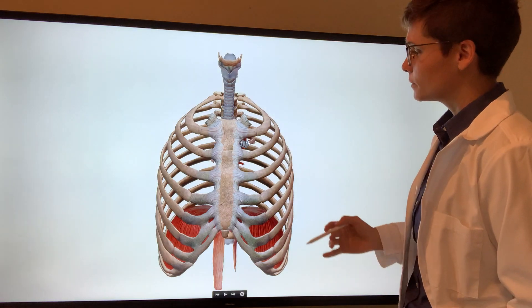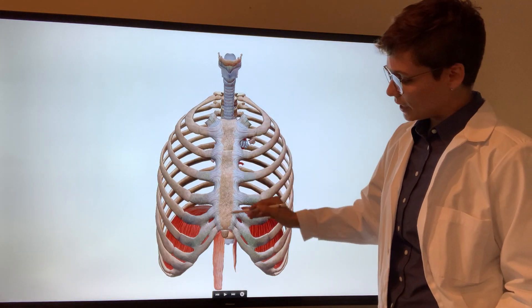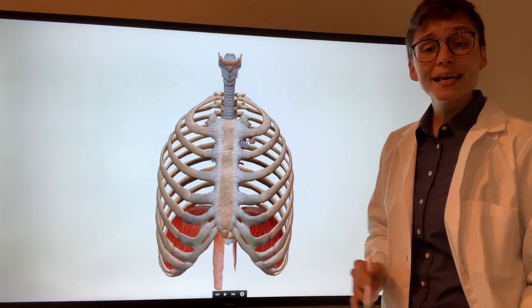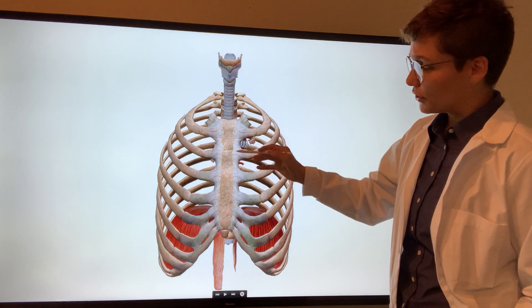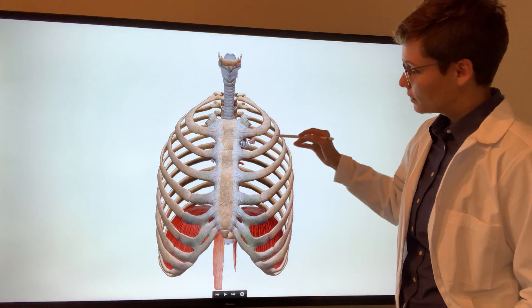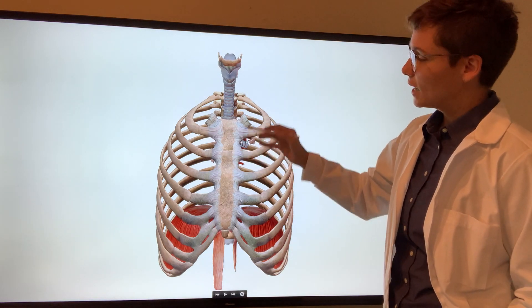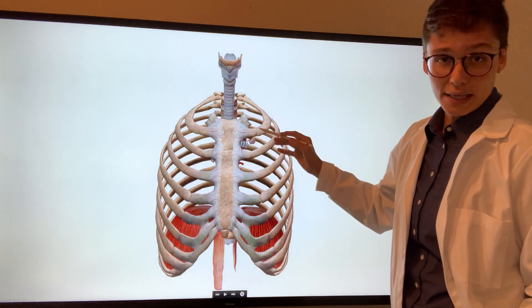Now let's discuss the sternum. We have the manubrium, the sternal body, and the xiphoid process. An important anatomical landmark to note here is where the manubrium and the body join together at the level of T4, T5. This is where rib number two joins in, and this is where the trachea bifurcates and the aortic arch begins.